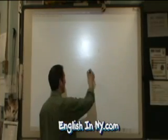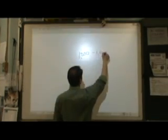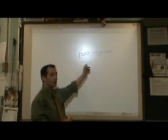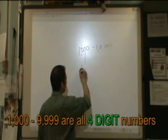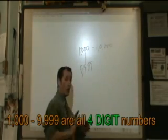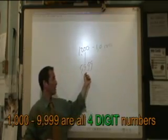Now we're going to go from 1,000 to 10,000. Now remember, this is called a four-digit number. So from 1,000 to 9,999, all of those numbers, every single one, four-digit number.